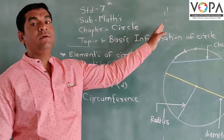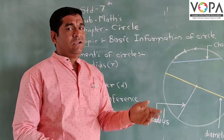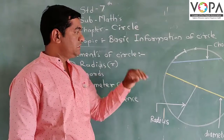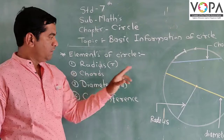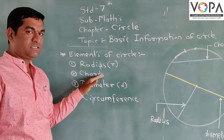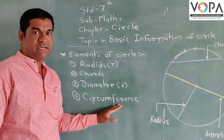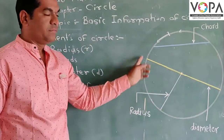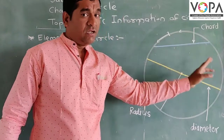Basic information of a circle — what we need to understand. The basic elements of a circle are the radius, chords, diameter, and circumference. First of all, this shape is called a circle.